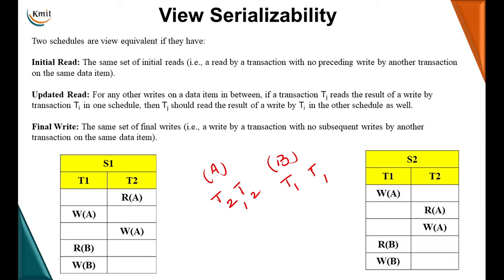The second condition is updated read: if transaction Tj reads the result of a write by transaction Ti, then in the equivalent schedule Tj should also read the data written by Ti. Looking at the write operations, write of A is done by both T1 and T2, whereas write of B is done only by T1.